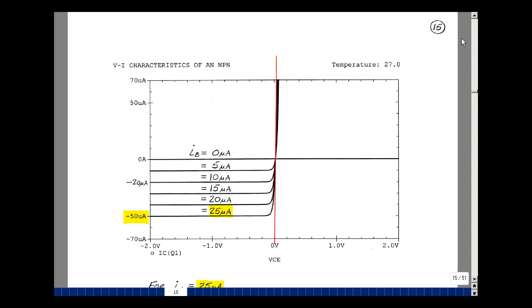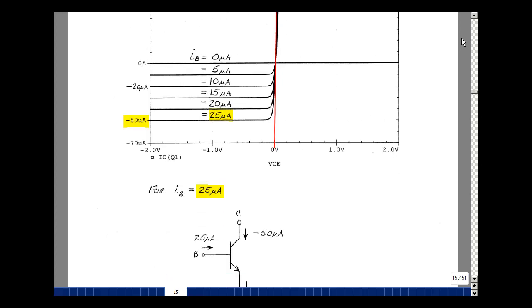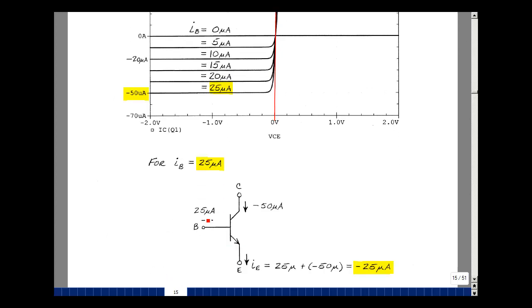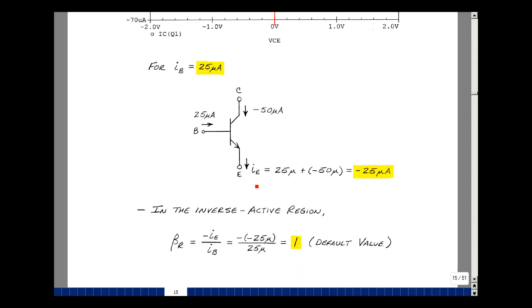Let's see whether this is consistent with our equations. At 25 microamps for the base current, I'm seeing that the collector current is minus 50 microamps. The emitter current is the base plus the collector. When I add those together, I get a minus 25 microamps.